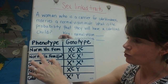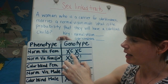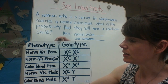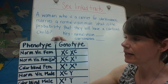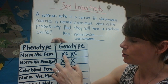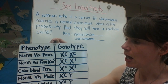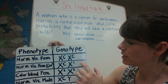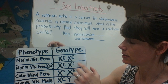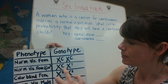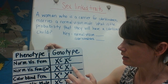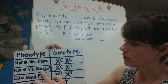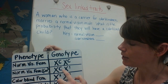The phenotype for a normal vision female — she's going to have two large C's, which represent the dominant trait, so she does not have colorblindness. A normal vision female who is a carrier will have X big C, X lowercase c. That's the recessive defective allele for colorblindness, but she has normal vision because she has one dominant allele.